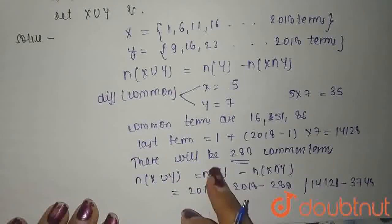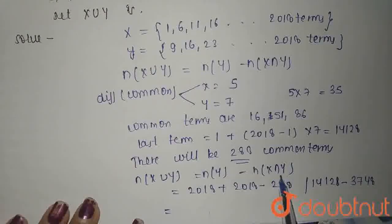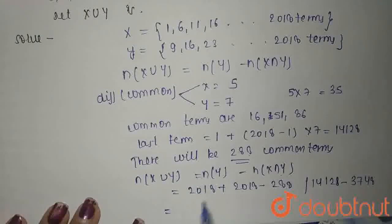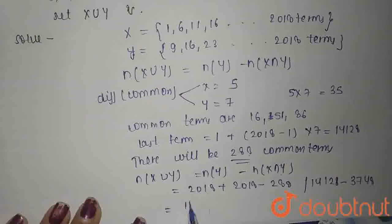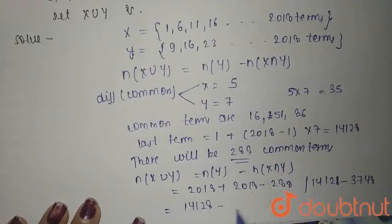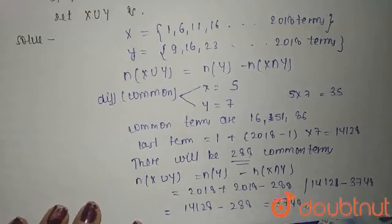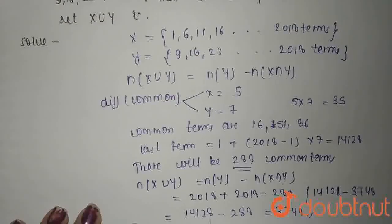n(X intersection Y) is the common terms, which is 288. So you will get the answer 3748. This is the correct answer. Thank you.